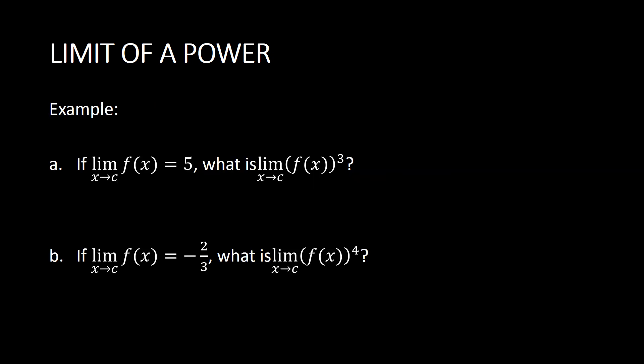Let's have an example. If the limit of f(x) as x approaches c is equal to 5, what is the limit of f(x) raised to the power 3 as x approaches c? We separate the limit of f(x) as x approaches c, then raise it to the power of 3. Since the limit of f(x) is 5, we get 5 to the power of 3, which equals 125.